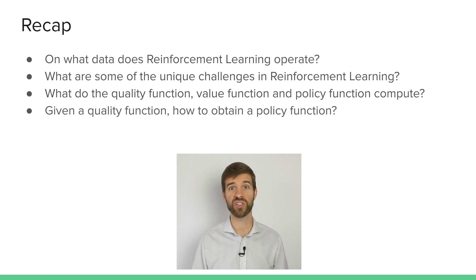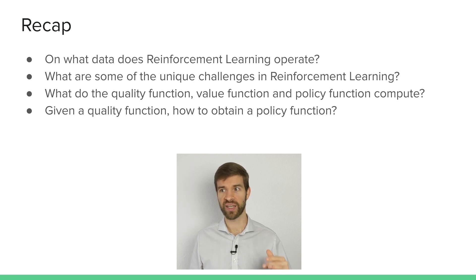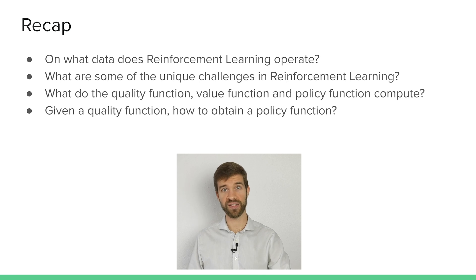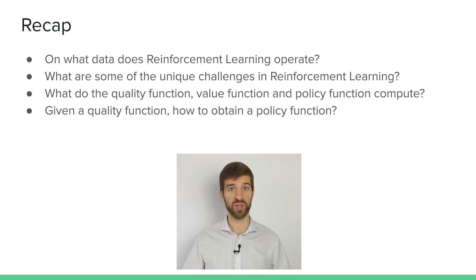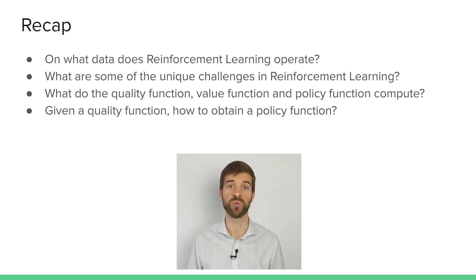Given a quality function, how can we obtain a policy function? The easiest way is to take the argmax of the action that gives us the highest expected reward into the future. We have a quality function and we're in state s, and we can compute for all different actions a how much reward we're going to get. We simply take that action which the quality function tells us would give us the highest reward into the future.